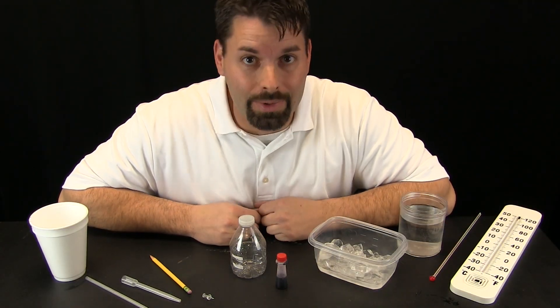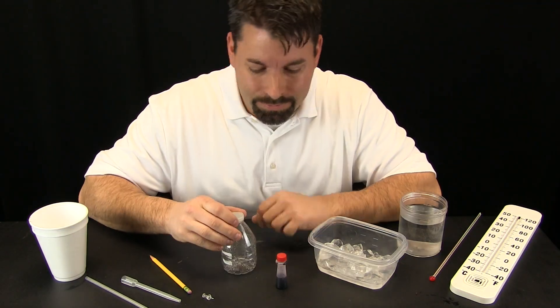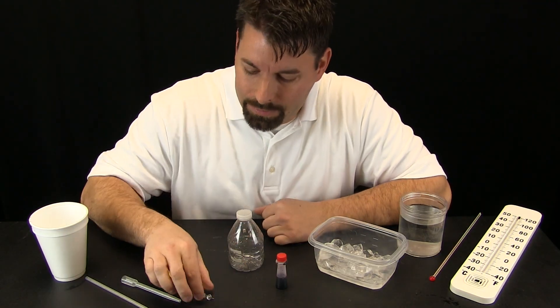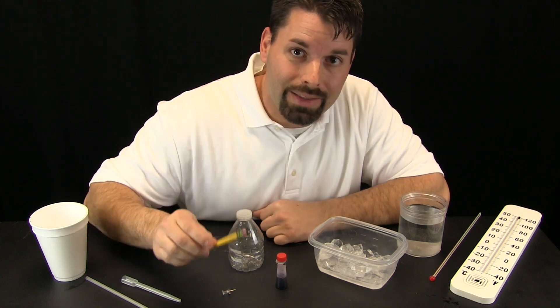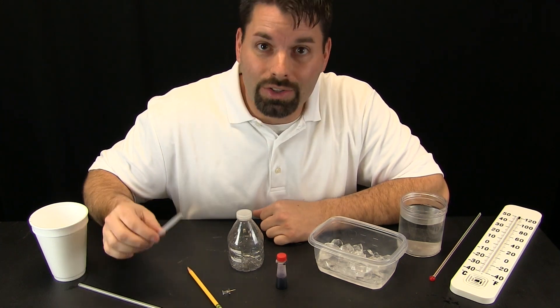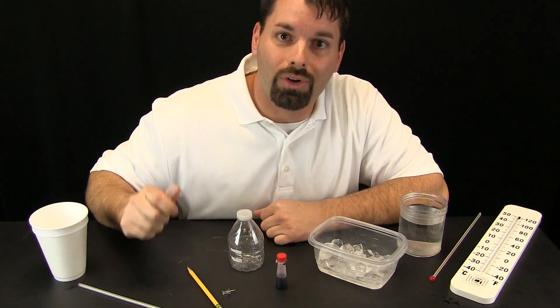So, what do I need to make my thermometer? Well, I need a bottle with a lid, some red food coloring if you like, a push pin to start a hole, a pencil to make that hole bigger, and then a straw, some kind of straw to go through the hole in the bottle.